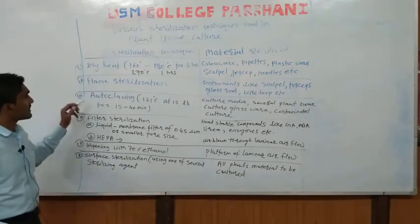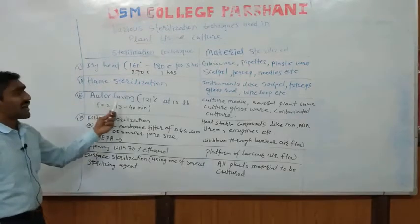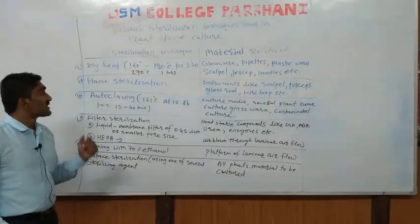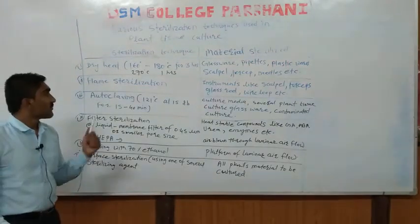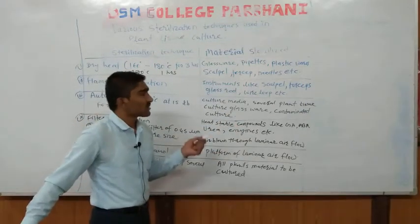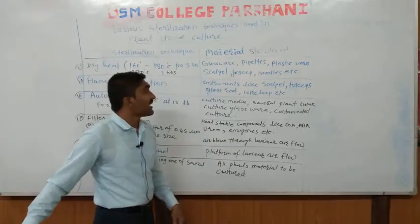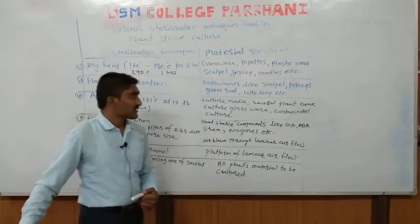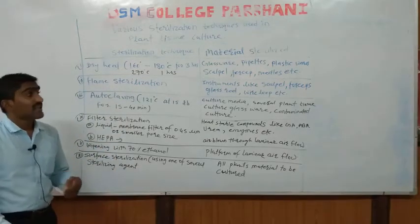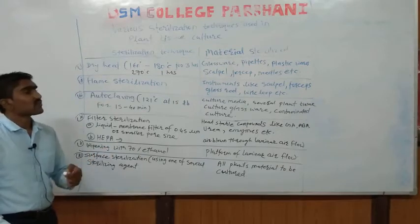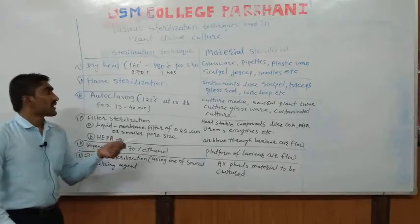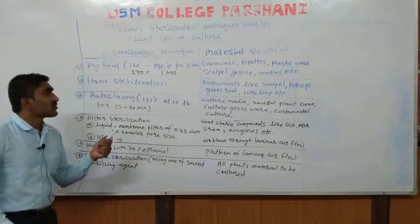Next is autoclaving, which is the most widely used sterilization technique. An autoclave is an electronic equipment used for sterilization. Using an autoclave, we can sterilize culture media — our MS media used for tissue culture — as well as glasswares. Contaminated culture plates can also be sterilized in the autoclave before washing, to avoid contamination or risk of infection.